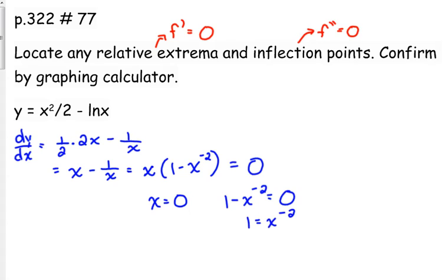So 1 is equal to x to the negative 2. Raise that to the negative 1 half, which is the square root, 1 over the square root. This would be calculator active. Well, not really. It says confirm by a graphing calculator. What's the problem? Let's go right back here. So 1 is equal to x to the negative 2. We okay with that? Yes.